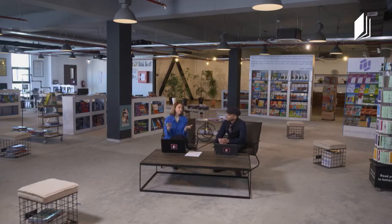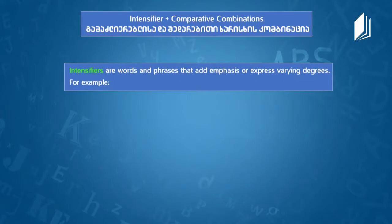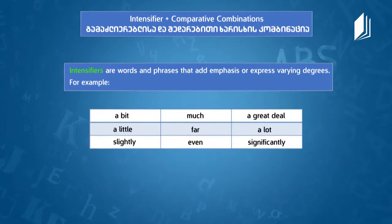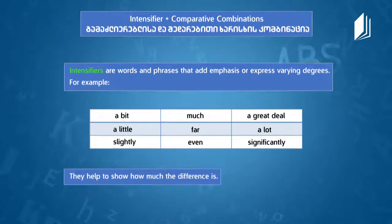Now it's time for grammar. Today's topic is intensifier plus comparative combinations. When we are comparing two things, sometimes we have to say how much the difference is — whether the difference is big or little. Intensifiers are words and phrases that add emphasis or express varying degrees. For example, we can use intensifiers like: a bit, a little, slightly, much, far, even, a great deal, a lot, significantly. They help to show how much the difference is.